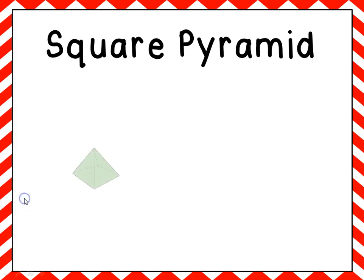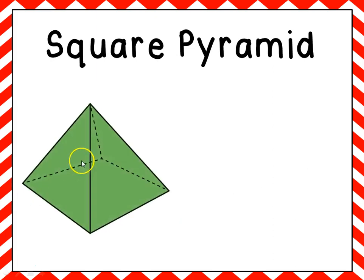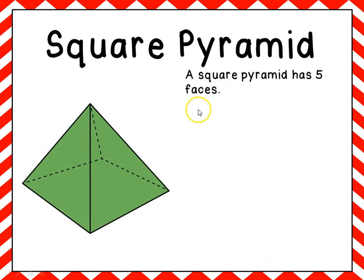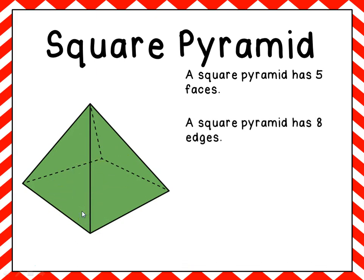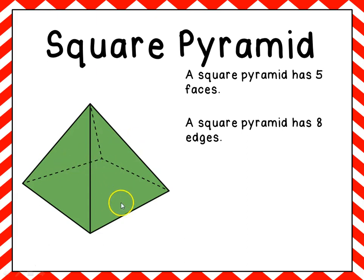Next we want to take a look at the square pyramid. A square pyramid has five faces — four triangular sides and one on the bottom. A square pyramid has eight edges.